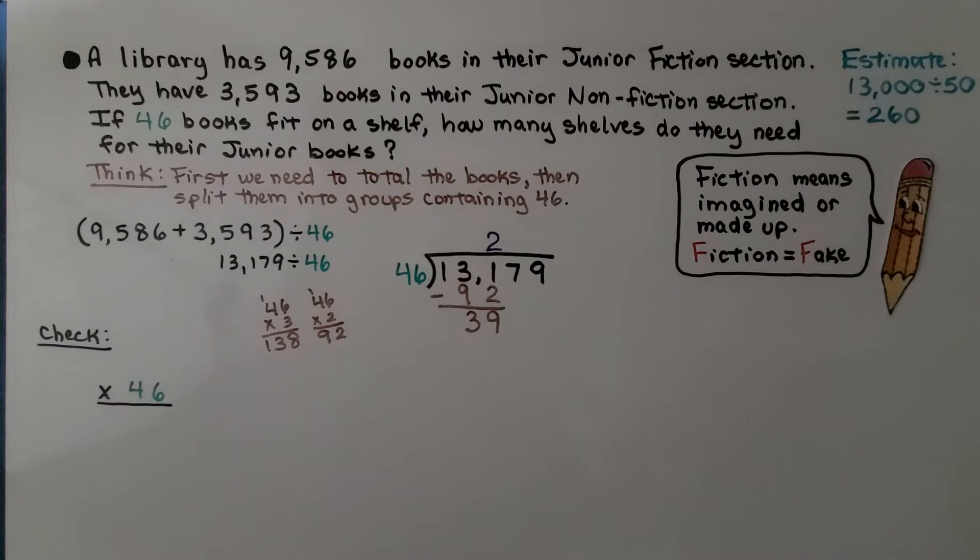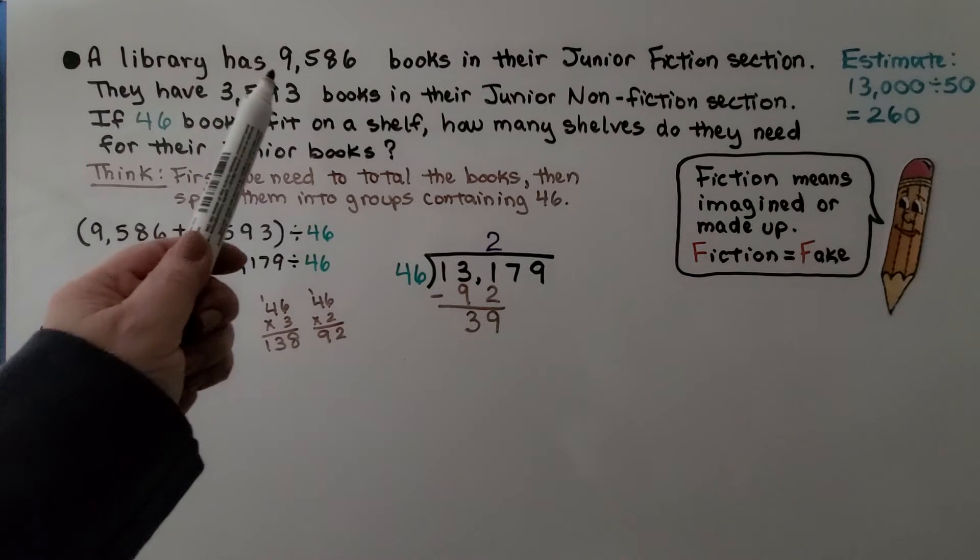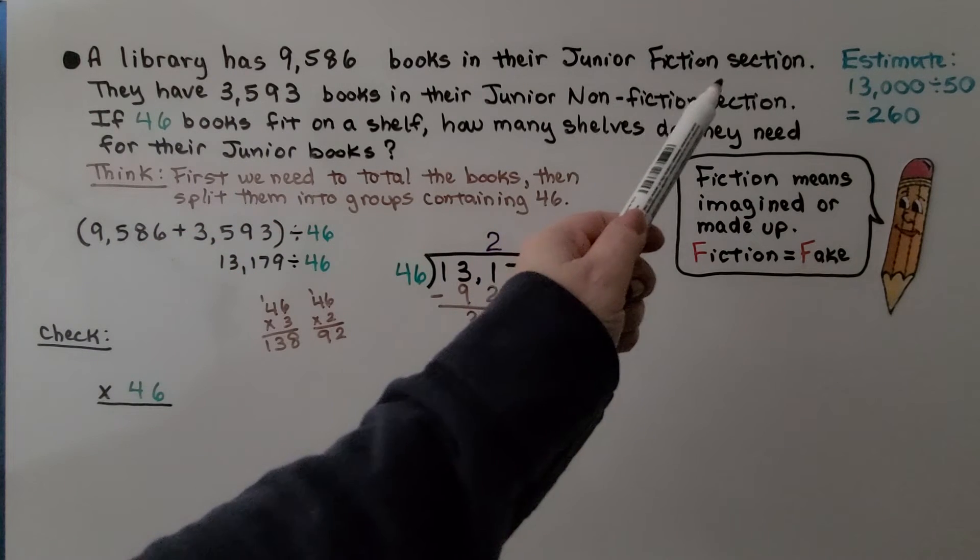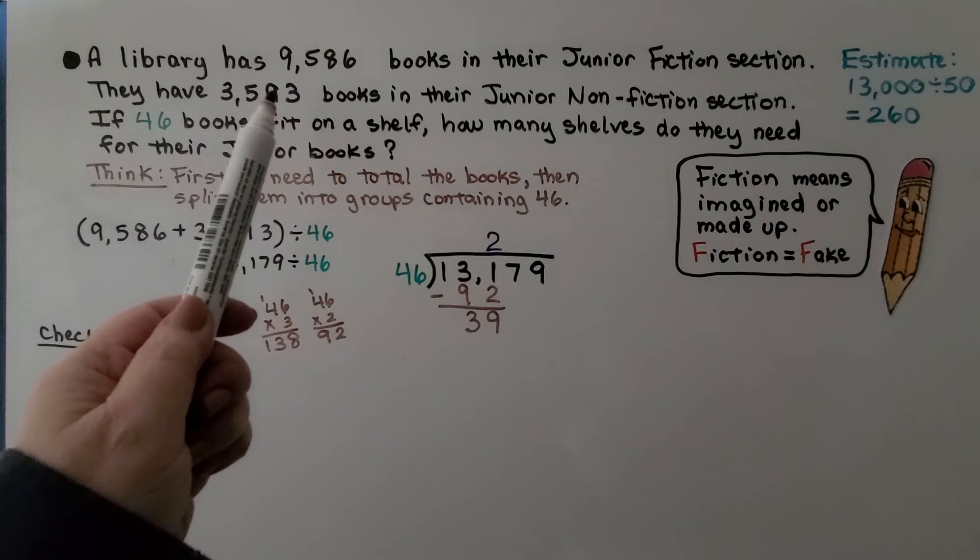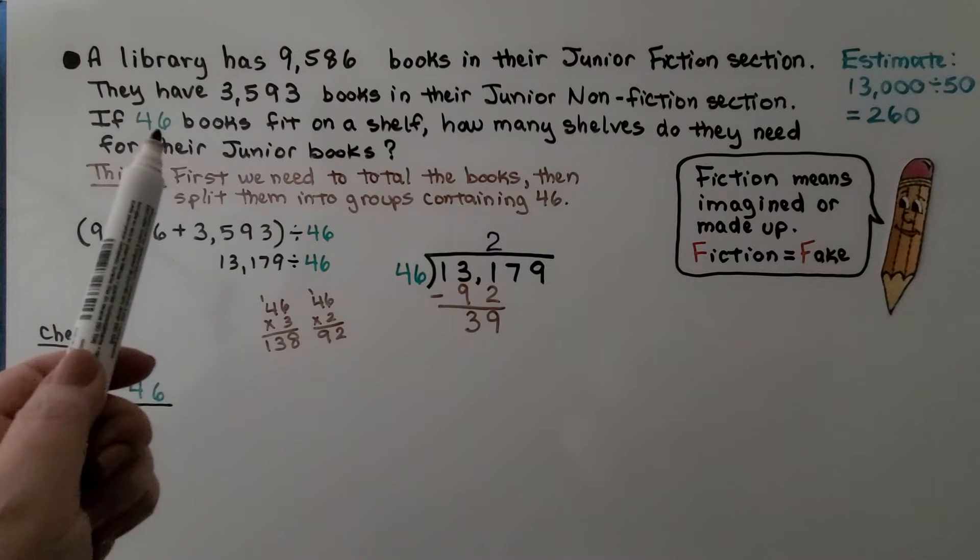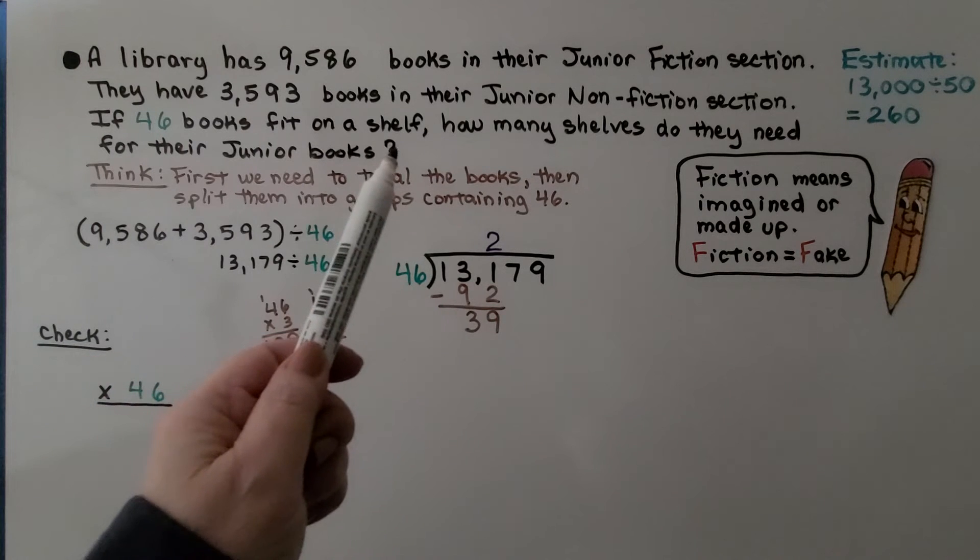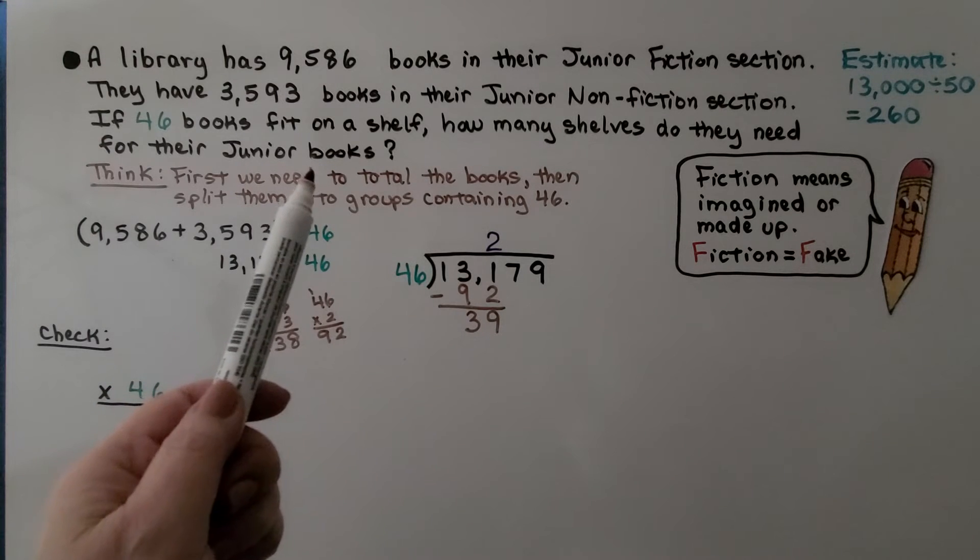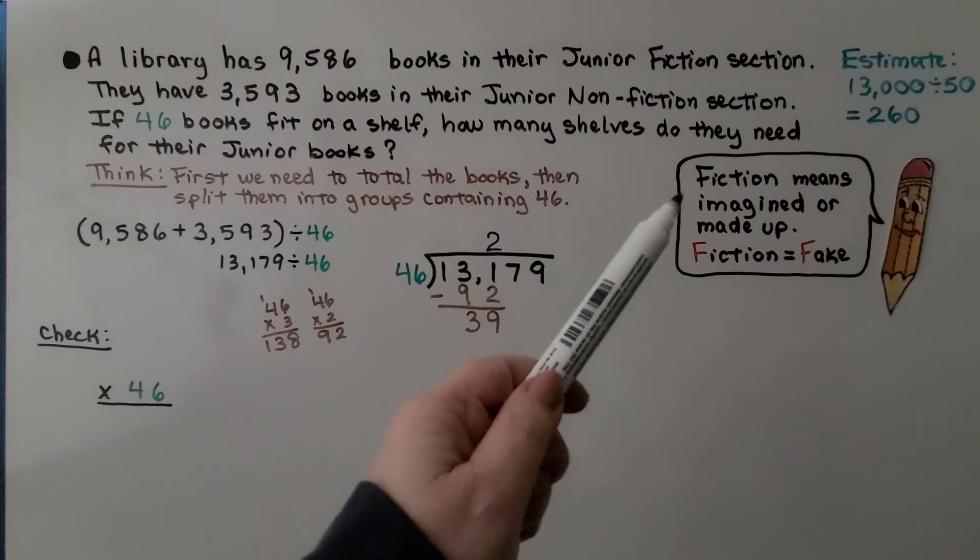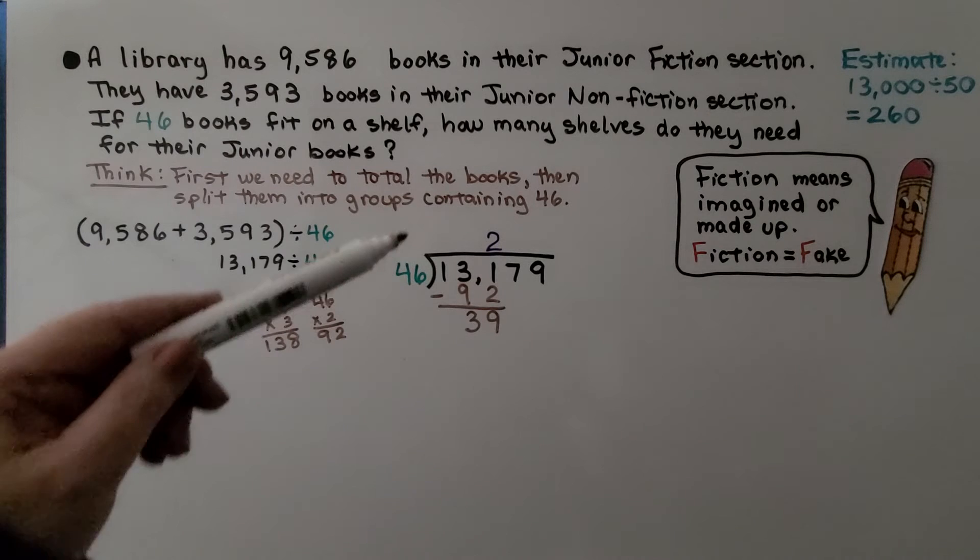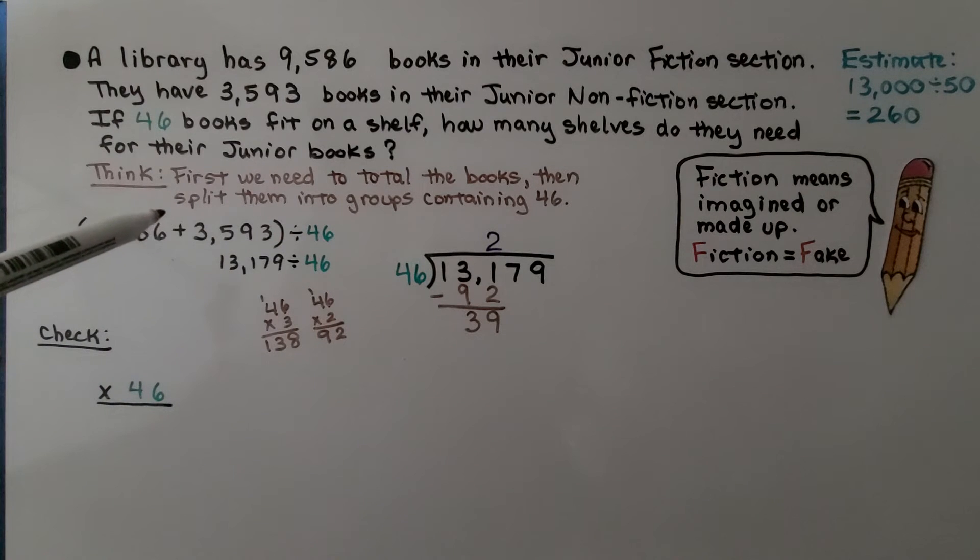Here we have a multi-step problem. The library has 9,586 books in their junior fiction section and they have 3,593 books in their junior non-fiction section. If 46 books fit on a shelf, how many shelves do they need for their junior books? Remember, fiction means imagined or made up. Fiction means fake.